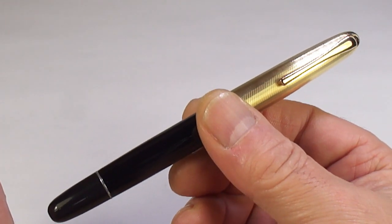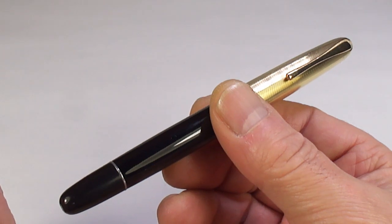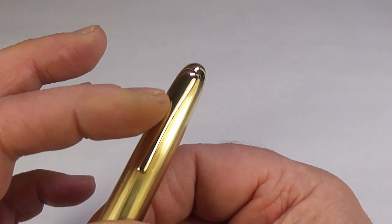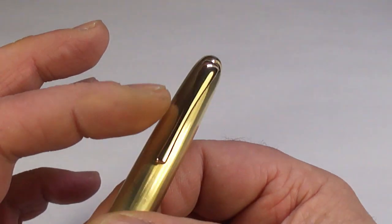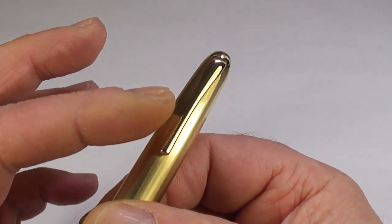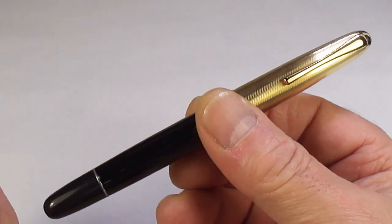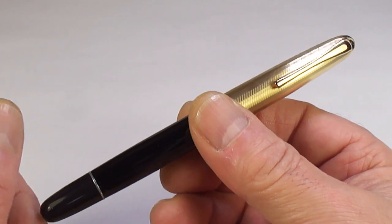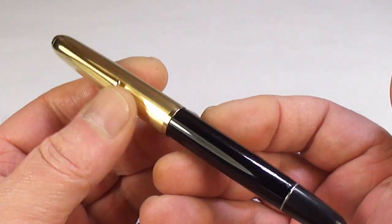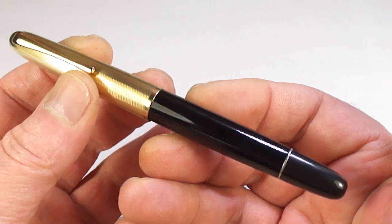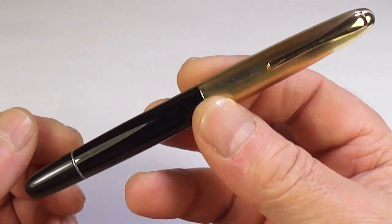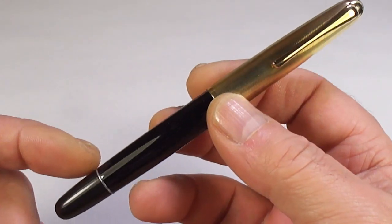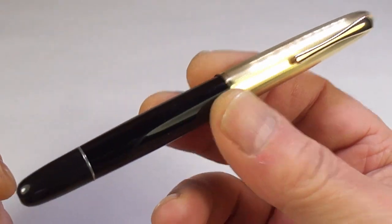The late 1940s through to 1950s, and then they brought out the 88K which has got this black line on the clip. But this pen was Aurora's answer to the Parker 51. At that particular period the 51 was a very popular pen, so Aurora brought this out. The difference being that this one is a piston filling fountain pen. These are absolutely gorgeous, they're a lovely pen.